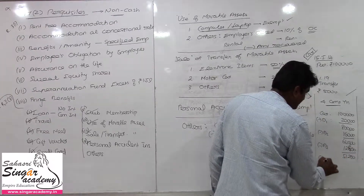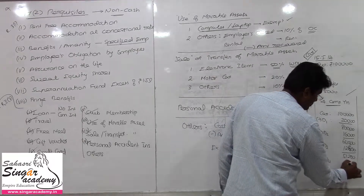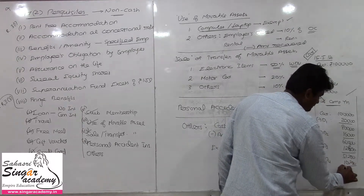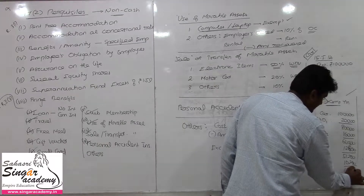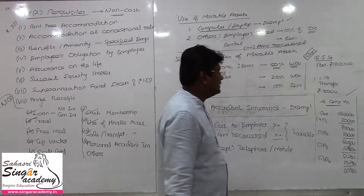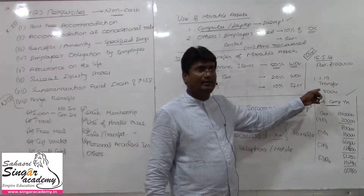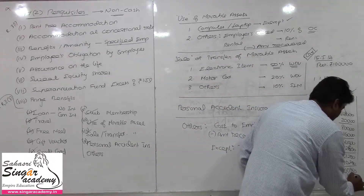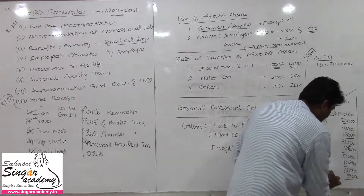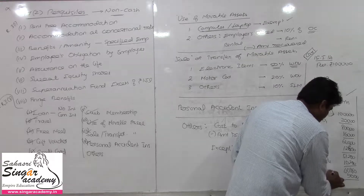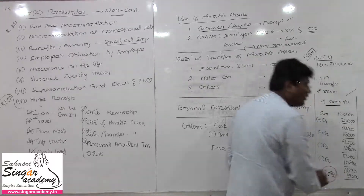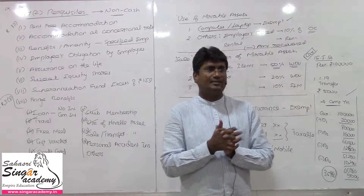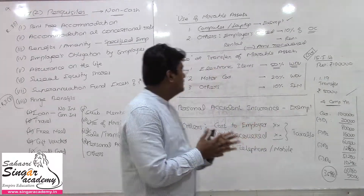Depreciation for the fourth year: 20% of ₹51,200 = ₹10,240, leaving ₹40,960. The amount recovered is ₹5,000. Deduct ₹5,000, so the balance ₹35,960 is the taxable value of the perquisite.